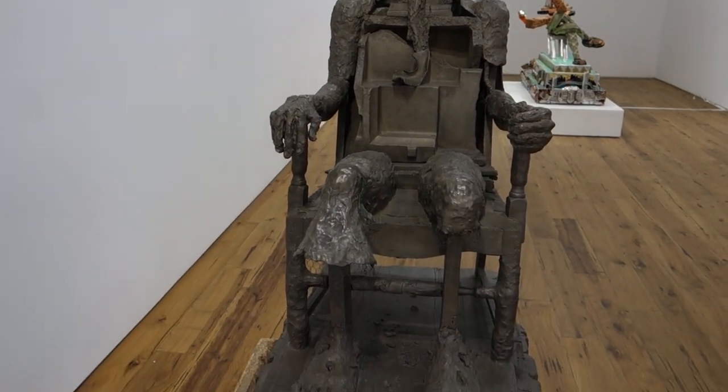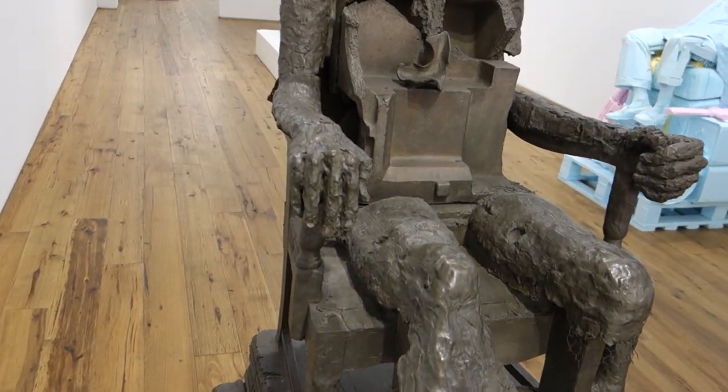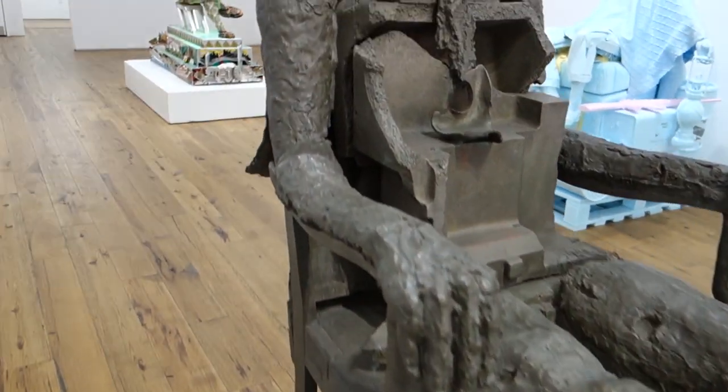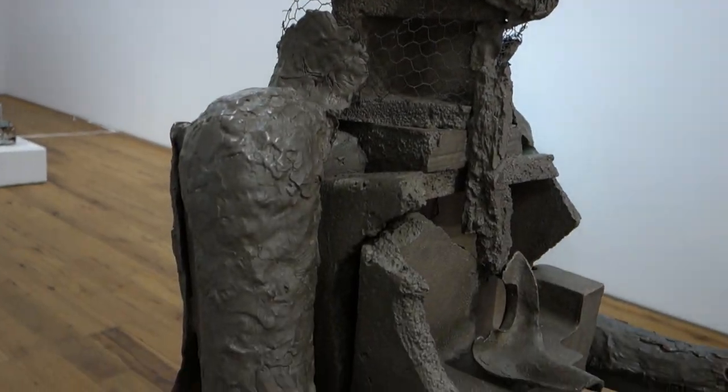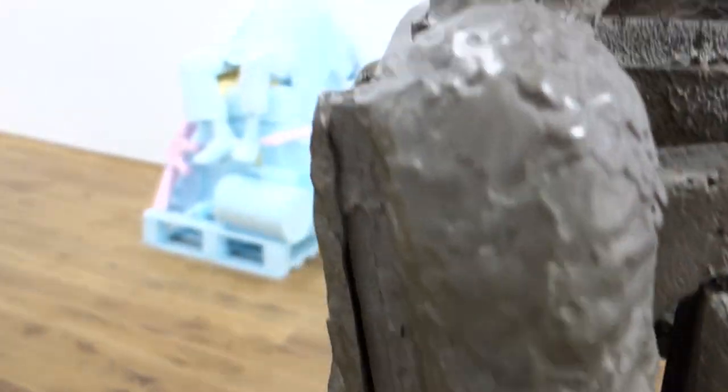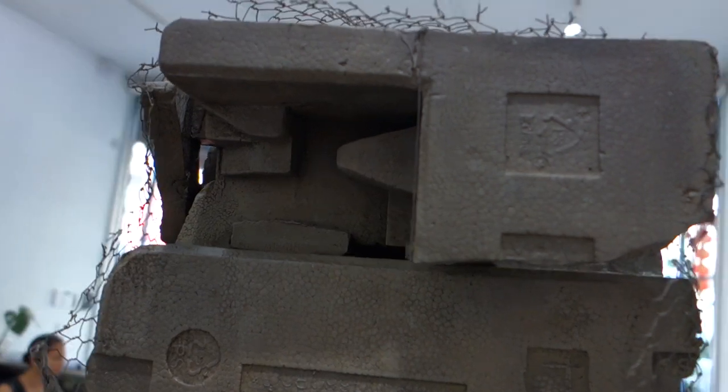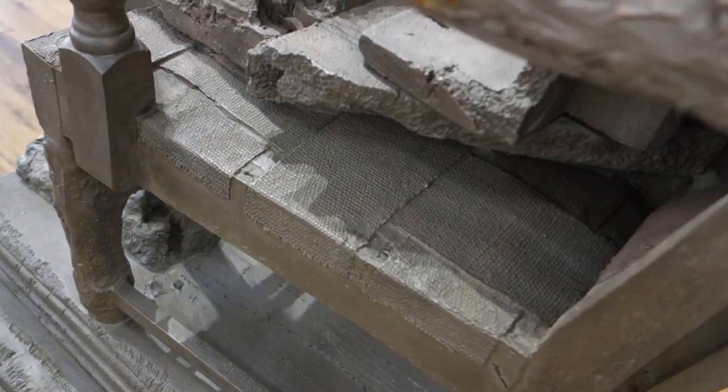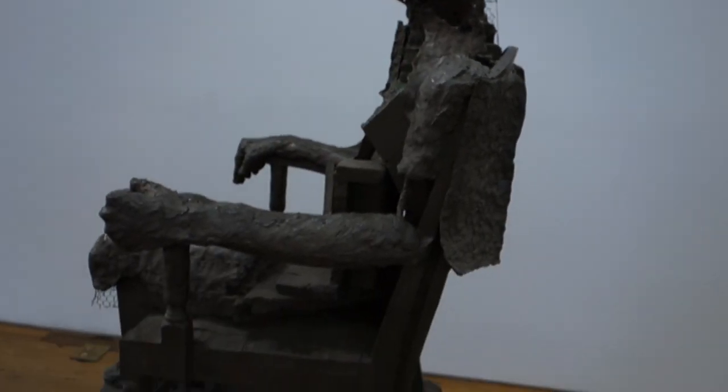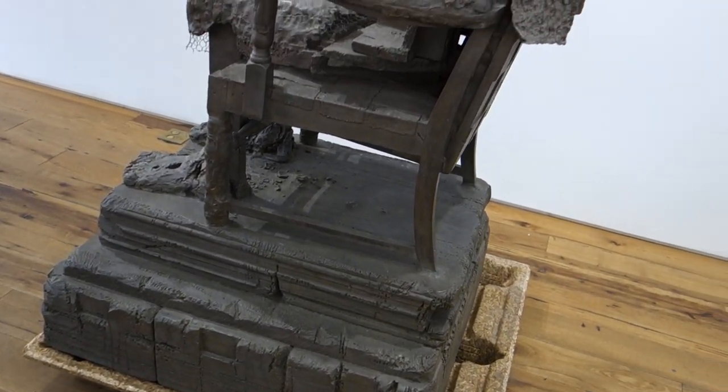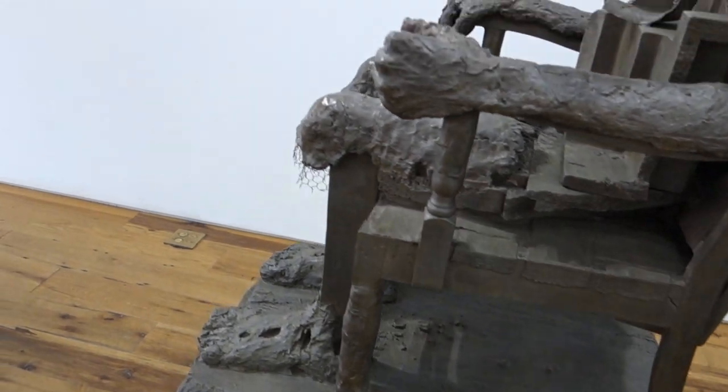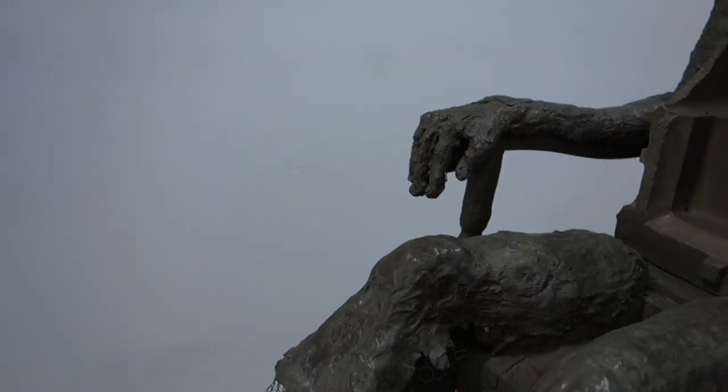This is The Orientalist by Huma Bhabha. I just like this is a very kind of classic example of a seated figure except that it's all kind of constructed out of what was formerly styrofoam, chicken wire, fabric, clay, and then it's all been cast in bronze. This piece is 70 by 33 by 41 inches. It says Huma is a Pakistani born artist and her work assembles a variety of found materials into abstract and often eerie forms.